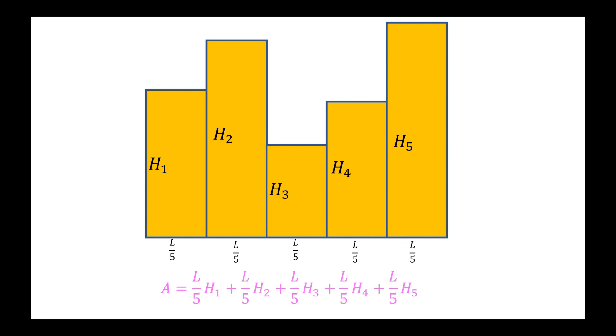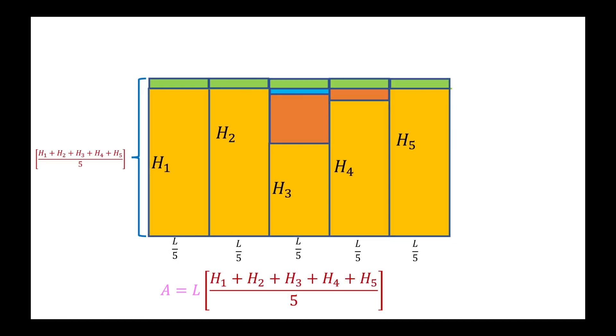But alternatively, we can just find the arithmetic mean of all the heights and then multiply by the length of this shape. This is because the arithmetic mean does nothing but redistribute all the heights evenly, and thereby redistribute all the area evenly, transforming the irregular shape into a rectangle with the same area.